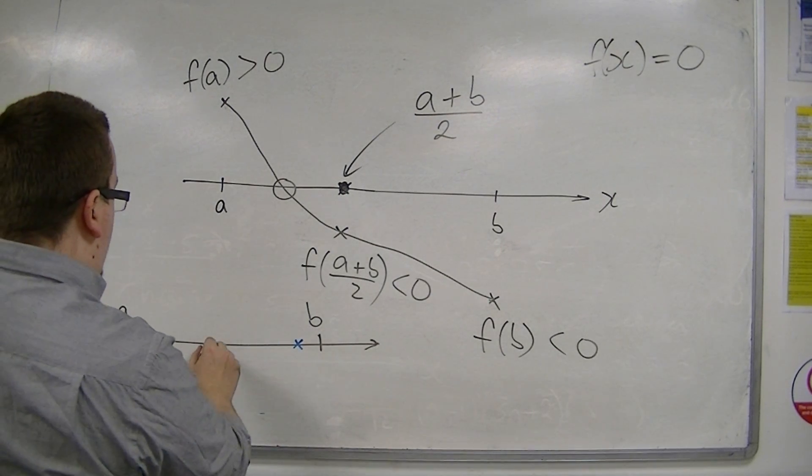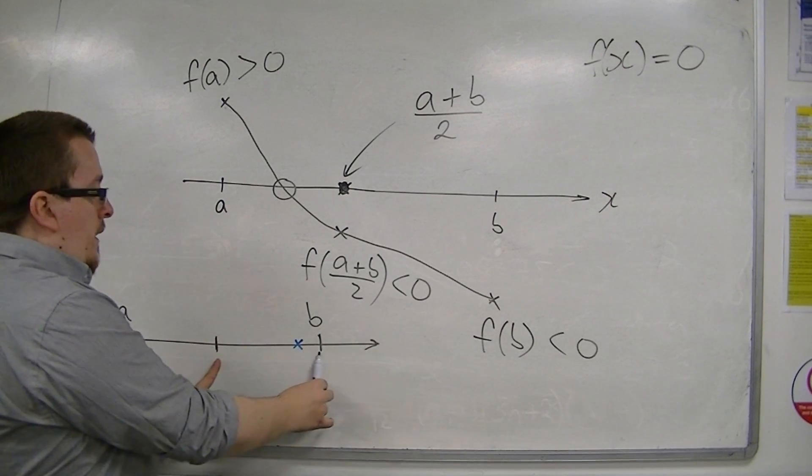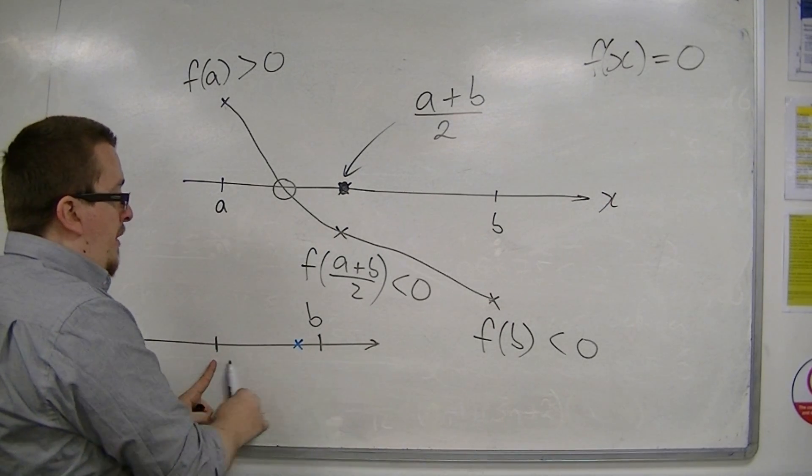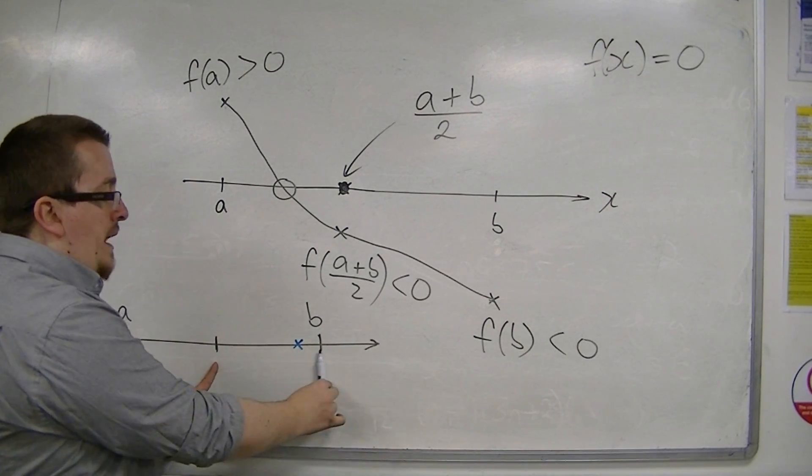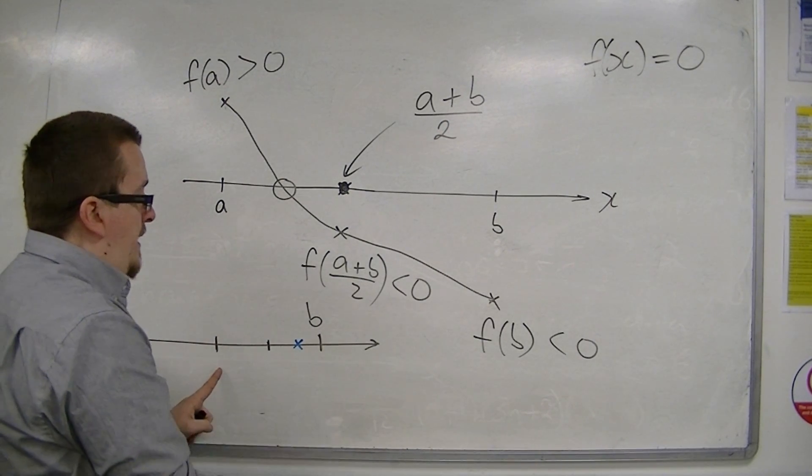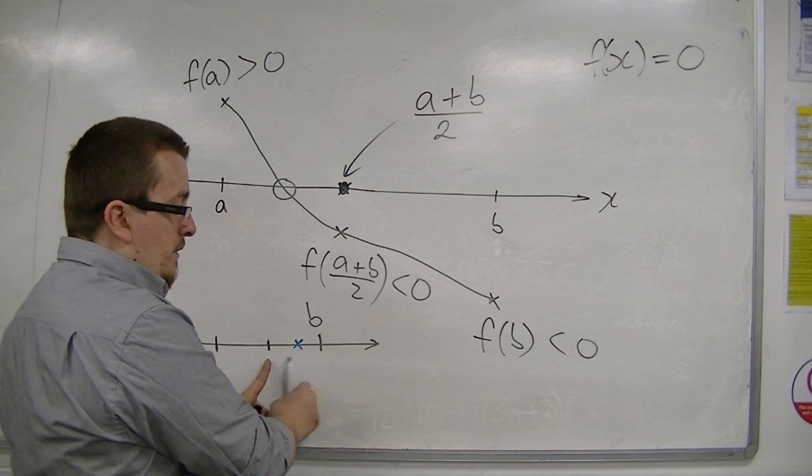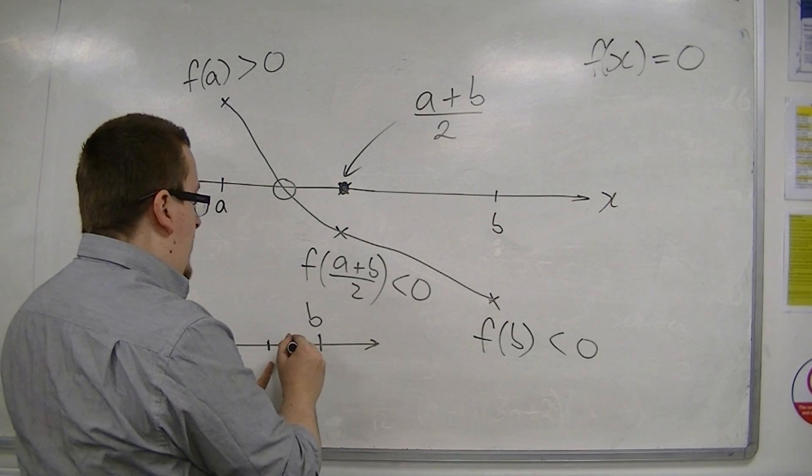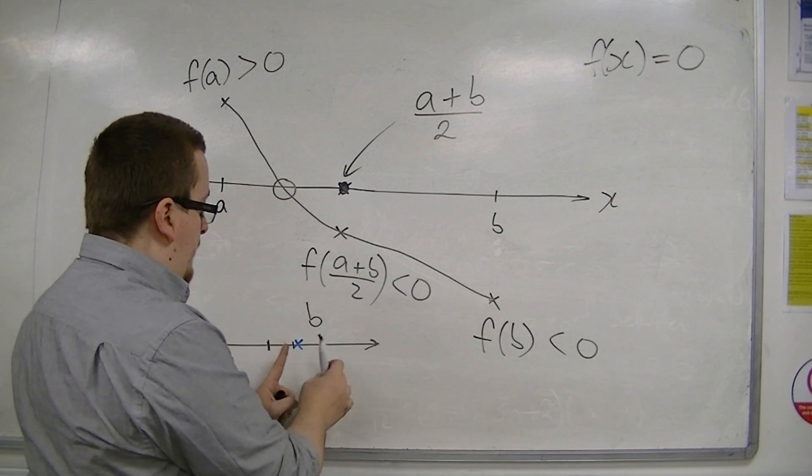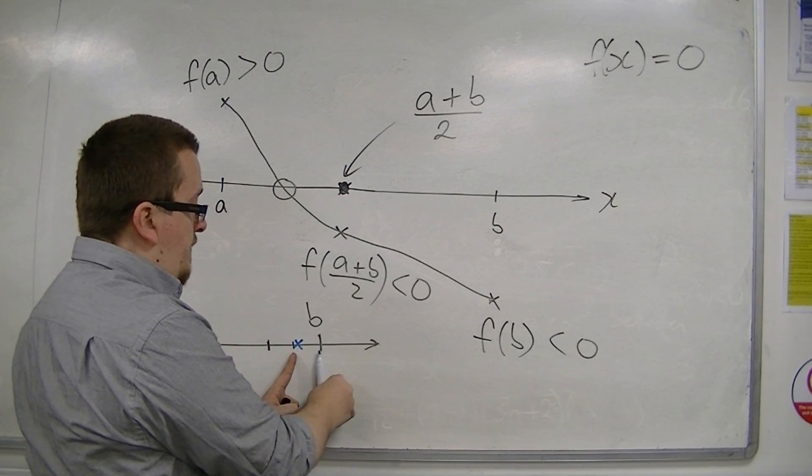So, if I now check the midpoint, a plus b over 2, I would then find that the solution must be between the midpoint and b. If I then found the midpoint between those two values, I could then say that the solution is between these two. And then I could find the midpoint of those two, and say the solution is between those two values.